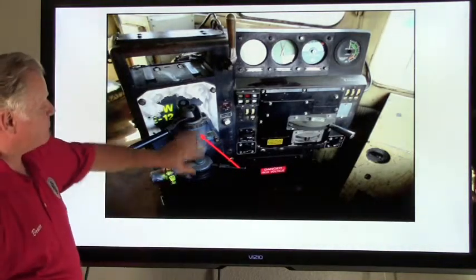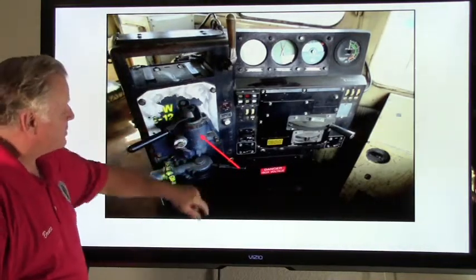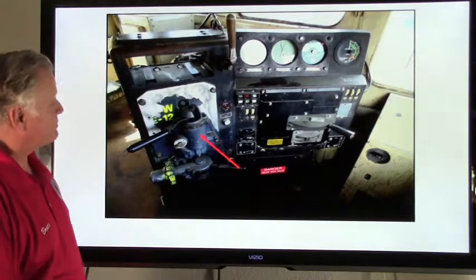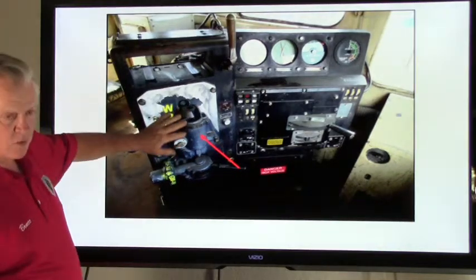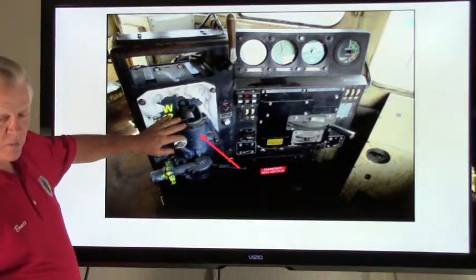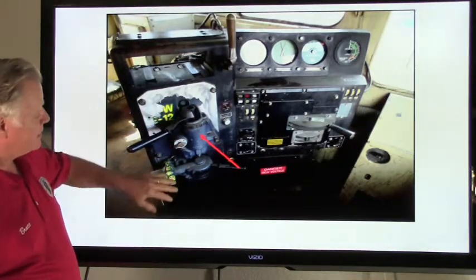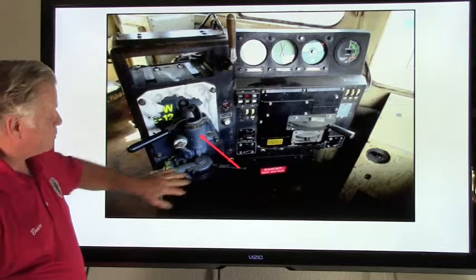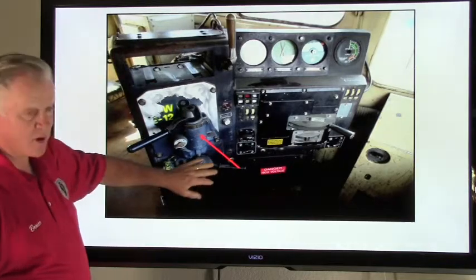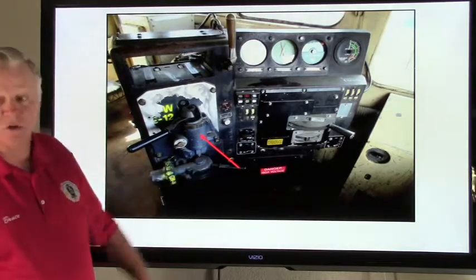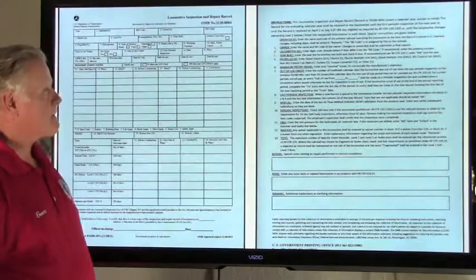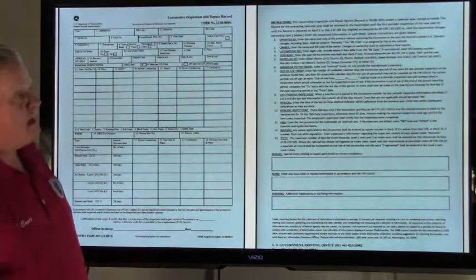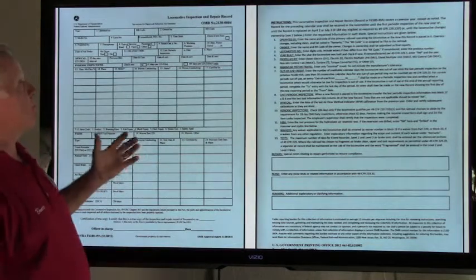Here again is the automatic brake valve we talked about earlier, and also the independent brake valve. Remember: the automatic brake valve controls the locomotive and train; the SA26 independent brake valve is for the locomotive consist only.